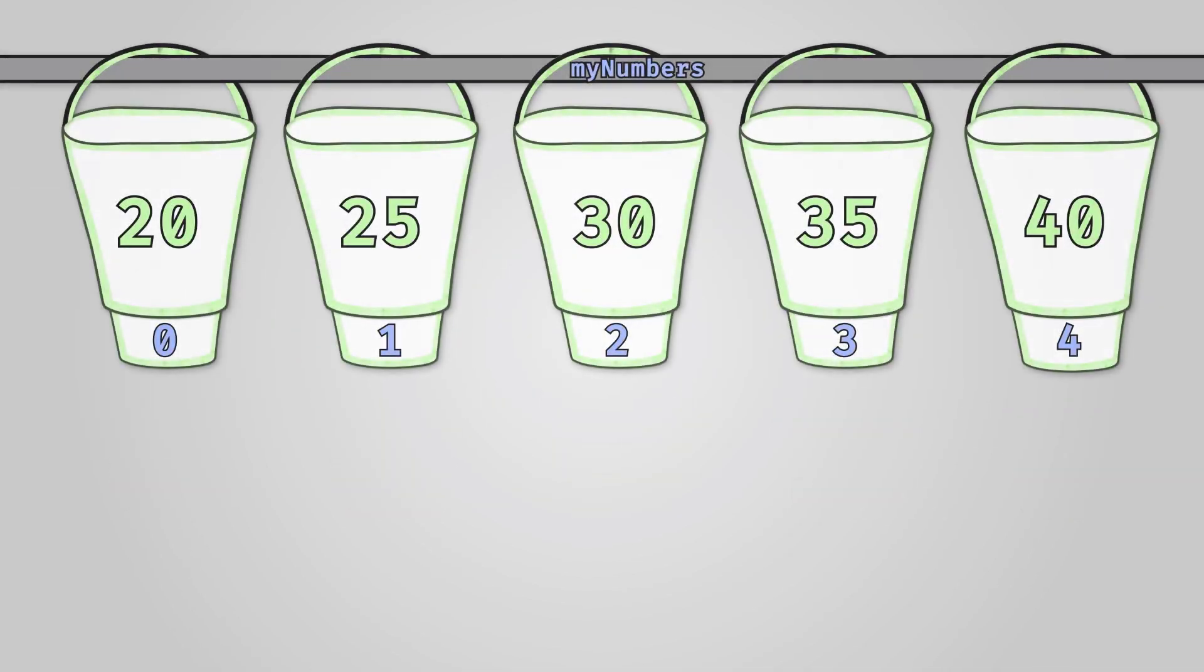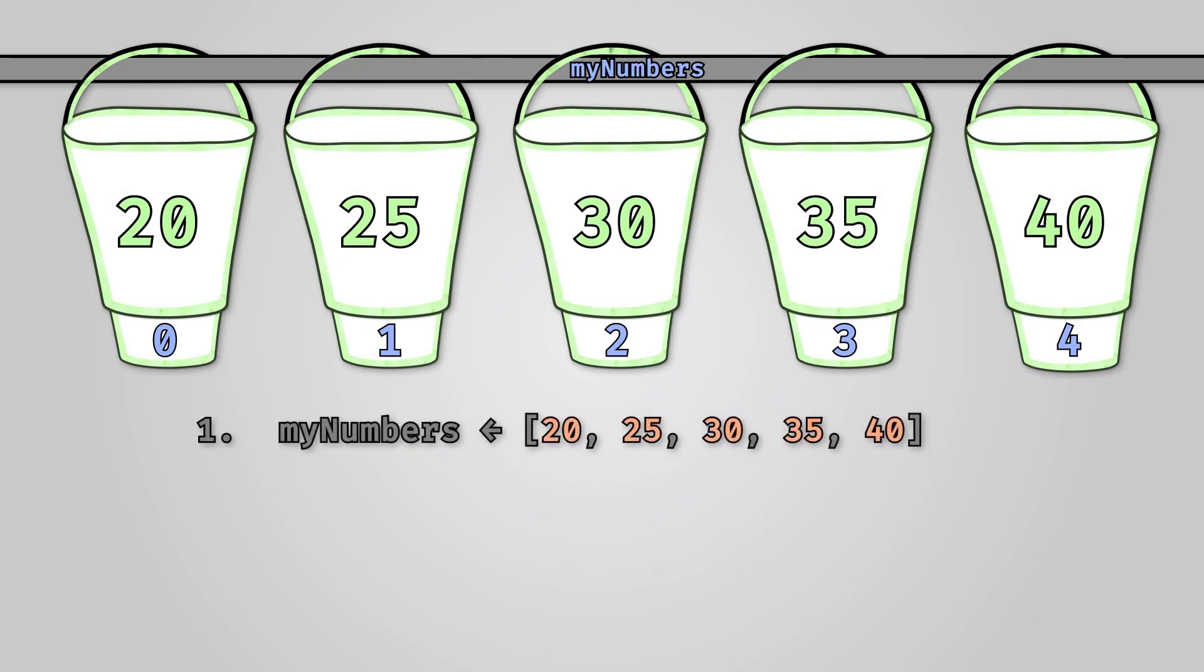In AQA pseudocode and Python we declare arrays differently though. We instead put the values we want to go into the array at the same time that we are declaring it. In the following pseudocode example we are going to create an array called myNumbers to store the integers 20, 25, 30, 35, and 40. This has automatically created an array with five elements, added five buckets to our pole, and then filled them with the data values.